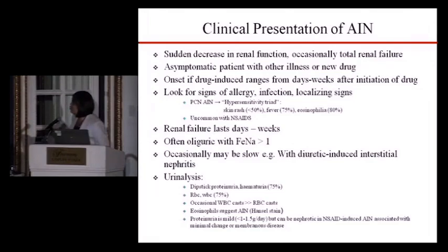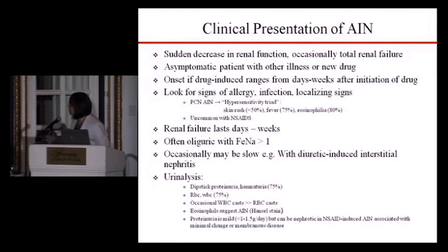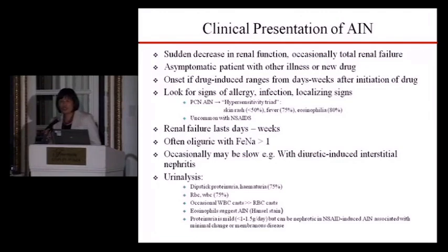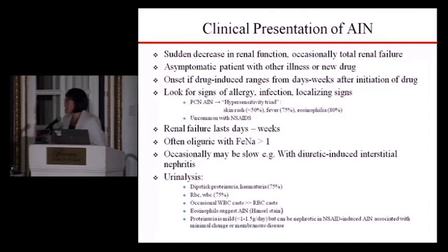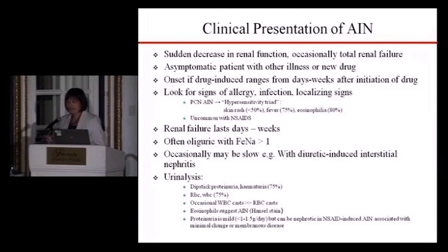The clinical presentation of AIN has been very heterogeneous, so diagnosis still heavily depends on history and physical examination. When AIN is drug-induced, onset can range from days to weeks. Look for signs related to urologic reaction or infection. For example, penicillin-induced AIN has a hypersensitivity triad: skin rash, fever, and eosinophilia. Note that this triad is very uncommon in NSAID-induced AIN. Patients with AIN-induced renal failure usually present over days to weeks, often with oliguria, and FeNa is usually greater than 1.